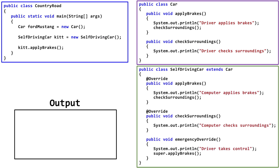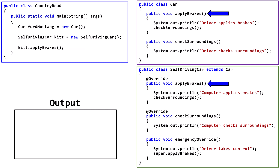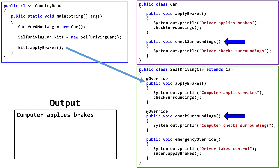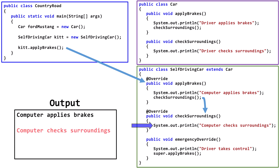Let's look at the Country Road class. The first two lines in the main method are the same — we declare and initialize the fordMustang and kit variables. This time, we call applyBrakes from the kit variable. We have two possible applyBrakes methods we might call. Since kit is pointing at a Self-Driving Car object, we use the most recent version, which is in the Self-Driving Car class. Java outputs 'computer applies brakes.' Similarly, since kit points at a Self-Driving Car object, checkSurroundings uses the most recent version, outputting 'computer checks surroundings,' and the program completes.